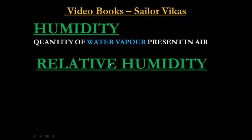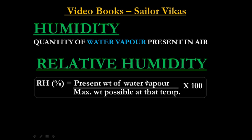Now let us see what is relative humidity. 'Relative' — as the word suggests — means it is relating to things. Here is the formula, and it is very simple: relative humidity is a percentage ratio between the present weight of water vapor and the maximum weight of water vapor possible at that temperature, multiplied by 100.